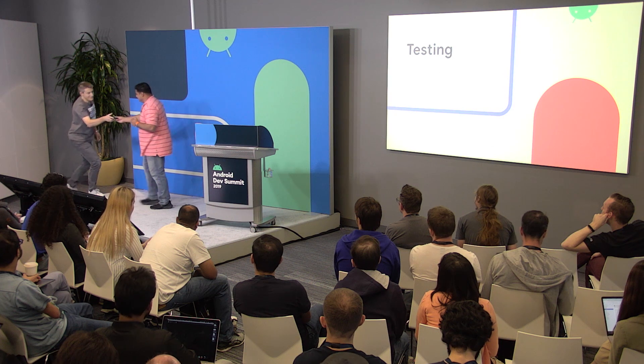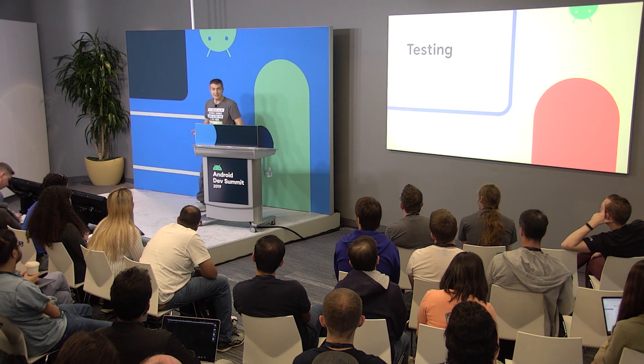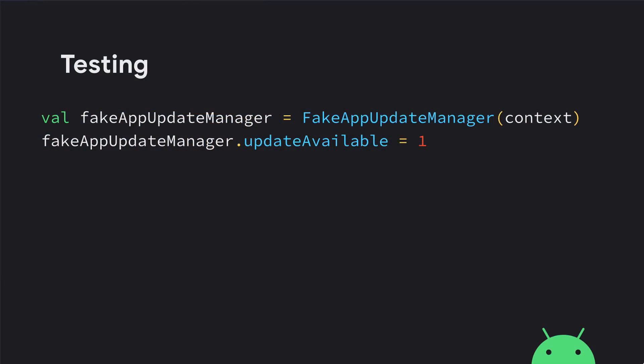Now I'm going to hand it over to my colleague Pietro to talk about testing. Since the introduction of in-app updates at I/O, one of the main feature requests was how to test in-app updates easily. Testing is really in three phases: during development, at the time of release, and to support existing releases to look at bugs. For testing during development, we have the fake update manager, where you can use unit tests to control and check the logic and UI of your in-app updates.